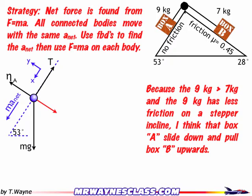Next I need to figure out which forces are parallel and perpendicular to ma net. Tension is parallel, so I'll leave that alone. Normal force is perpendicular, so I'll leave that alone. But mg is neither parallel nor perpendicular, so I'm going to make a triangle out of mg that has parallel and perpendicular components. The perpendicular component is drawn in red, and the parallel component is parallel to ma net. The opposite side is mg sine 53 and the adjacent side is mg cosine 53.